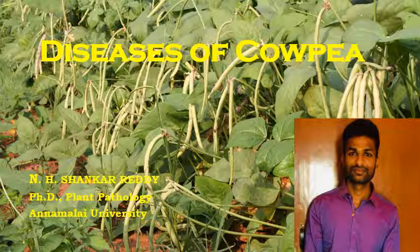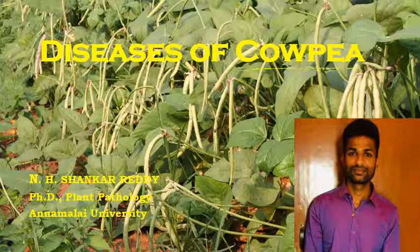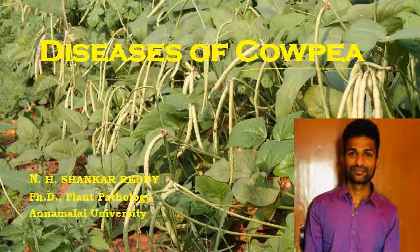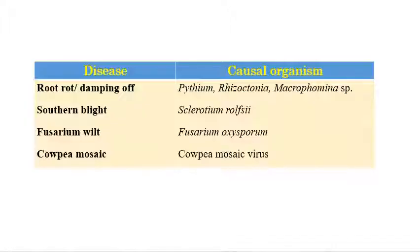Diseases of Cowpea. Now we will see the list of important diseases in cowpea. The scientific name of cowpea is Vigna unguiculata. My name is N.H. Shankar Reddy and I am doing PhD in plant pathology at Annamalai University. Coming to the list of important diseases in cowpea.